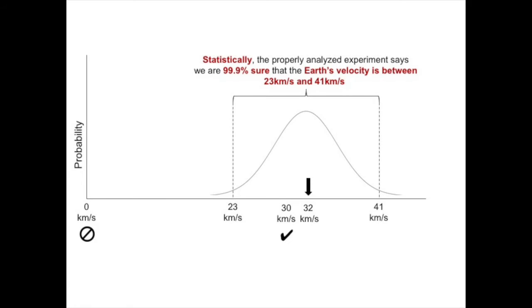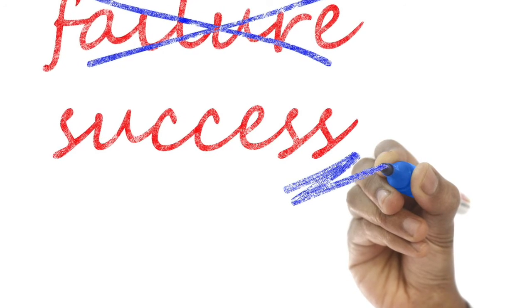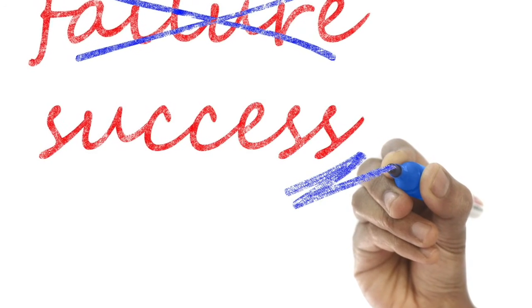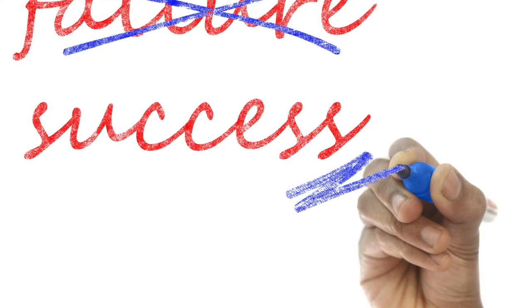The good news is that when their measurements are converted into a velocity using the wavelength-based equation, I found that they measured the Earth's velocity as 30 kilometers per second. That's right. They were successful. And this answer is statistically supported.